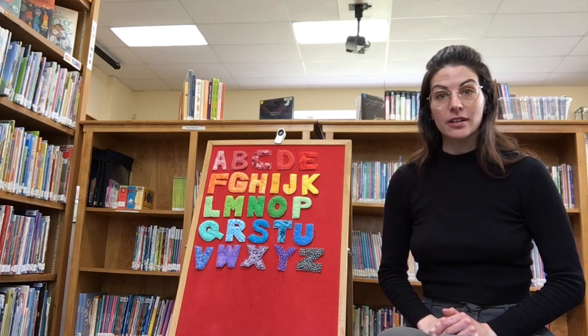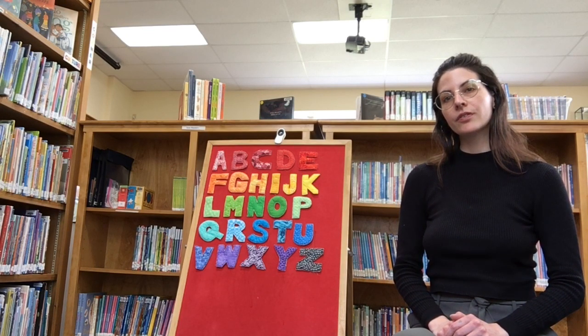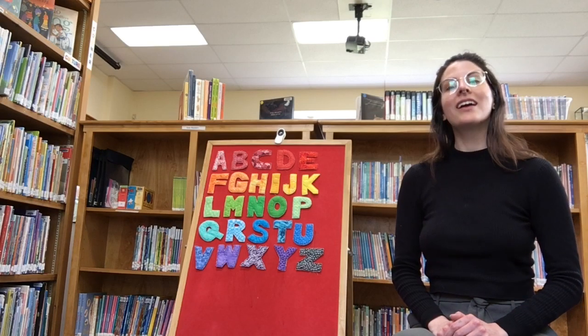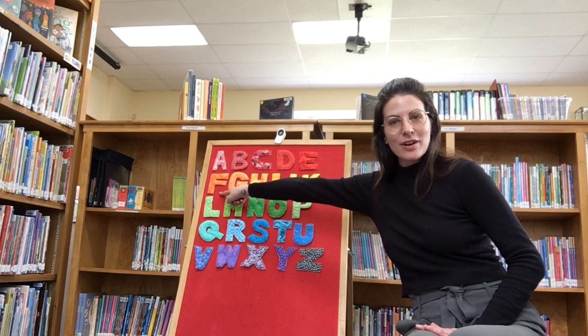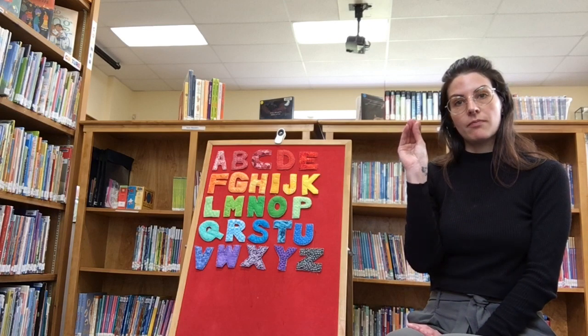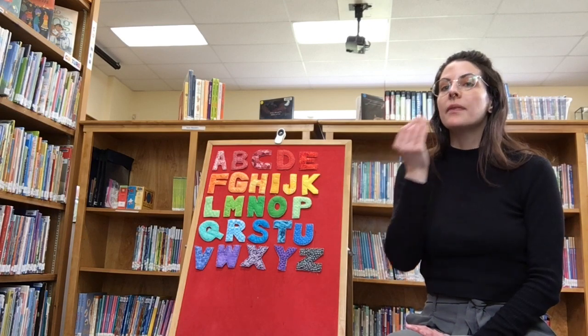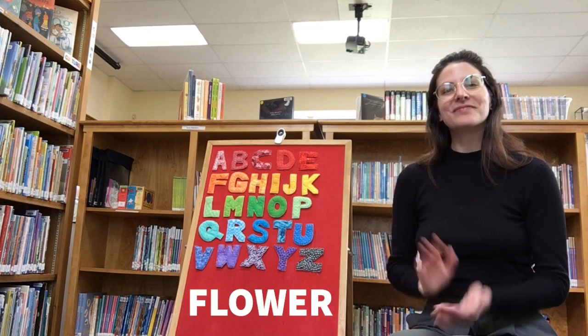How about we learn how to say flower? F — flower starts with the letter F. I made a little bit of a mistake here — I made the letter B instead of the letter F. So this is how you make the F: you take your pointer finger and you touch it to your thumb. To say flower in sign language, you'll take your fingers and pinch them to your thumb. This is our little flower bud, and then just pretend to sniff it under each of your nostrils. Flower.